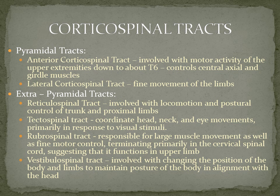The corticospinal tracts are found in the pyramidal tracts, composed of the anterior corticospinal tract and the lateral corticospinal tract. Higher up in the brain stem, the pyramidal tracts would also include the corticobulbar tracts — the motor tracts to the cranial nerves. But here in the cervical spine, the corticobulbar tracts have tapered off. The anterior corticospinal tract is involved with motor activity of the upper extremities down to about T6, mostly upper extremity and cervical spine movements.